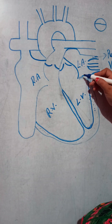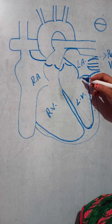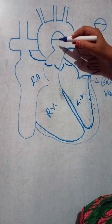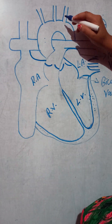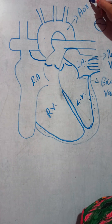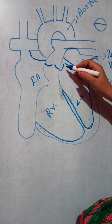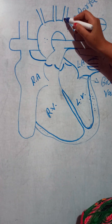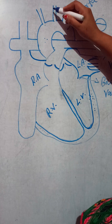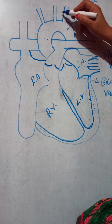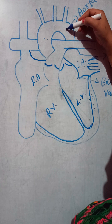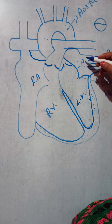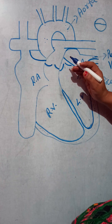The oxygenated blood moves from the left atrium to the left ventricle and then towards the aorta, which is the largest artery of our body. Blood from the left ventricle moves towards the aorta, and from here you can see these small arteries which are connected to different organs of our body. The oxygenated blood from the aorta is distributed to all parts of our body.